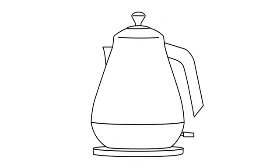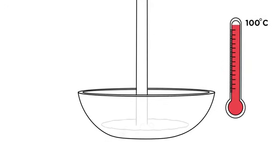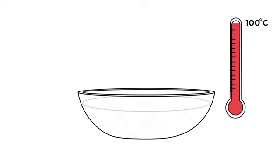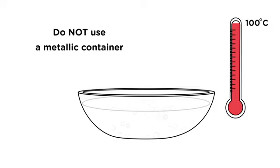Boil some water in a kettle or a small pan and allow to simmer for at least 15 seconds. Immediately pour the boiling water into a ceramic bowl, non-metallic bowl, container or pot. It is essential that you do not use a metallic container, otherwise your mouthguard will stick to the sides.